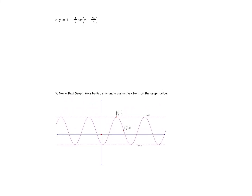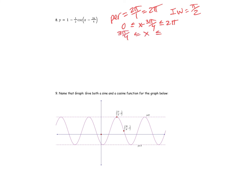How I would go about graphing a couple of periods of this is very similar to what we did for sine and cosine. The period is two pi over B, and B is just one, so the period is two pi. That means my interval width is going to be pi over two. Let's incorporate the phase shift — I've got x minus three pi over four.